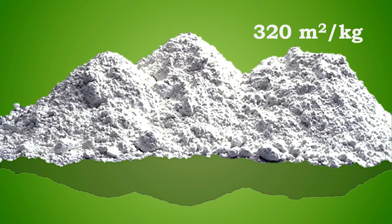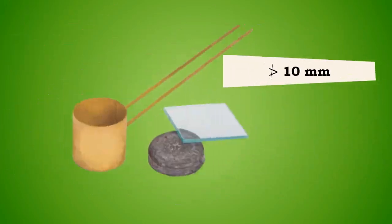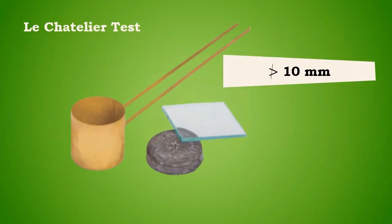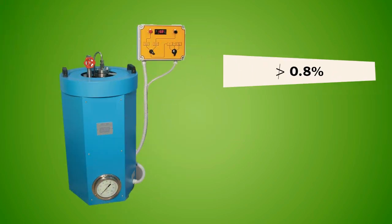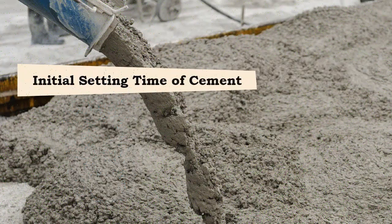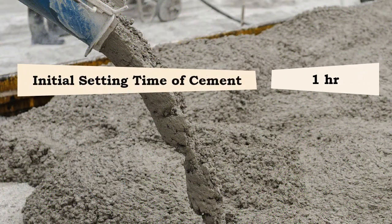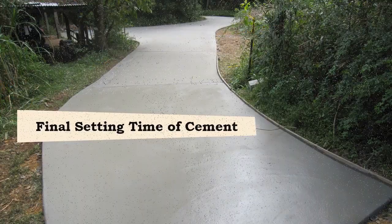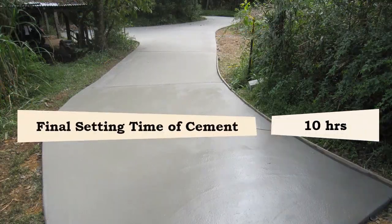The cement should not have expansion more than 10 millimeters for the Lechatelier test and 0.8 percent for the autoclave test. The initial setting time of the cement is one hour, and the final setting time is 10 hours.